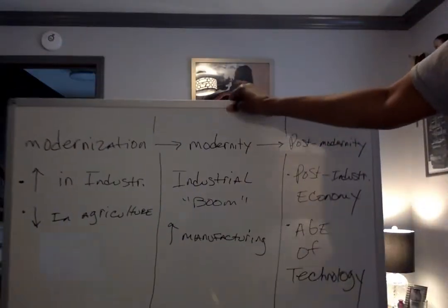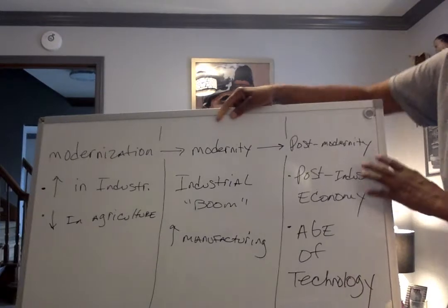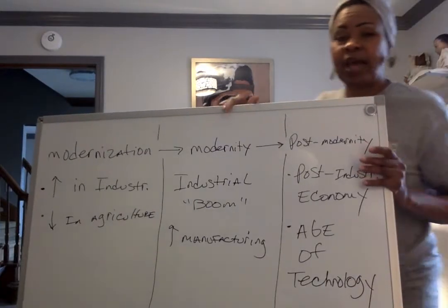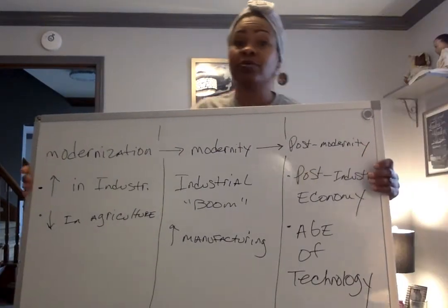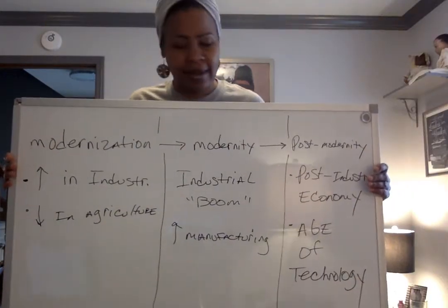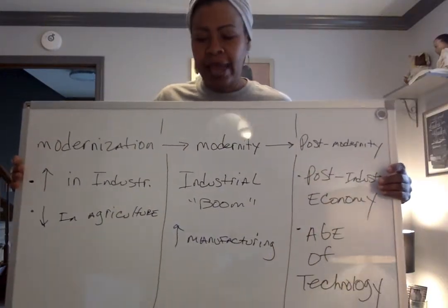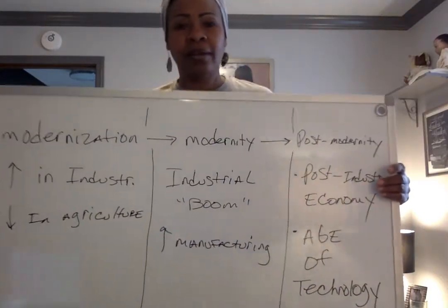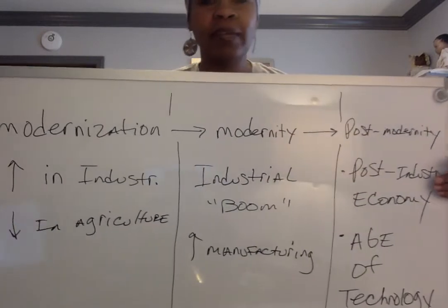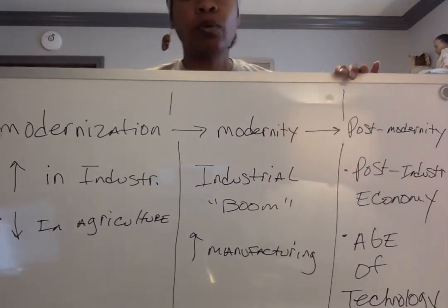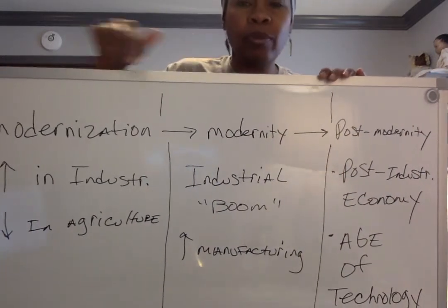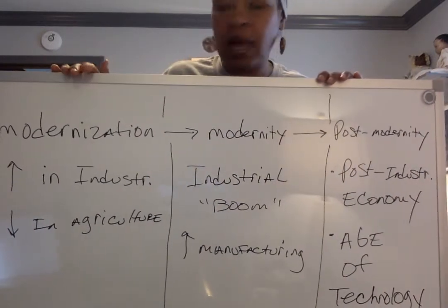What I have here — let me stand up and grab this — is a dry erase board. I don't have my classroom right now because we're teaching online, so I had to invest in one of these. What you see here are three phases of the economy.